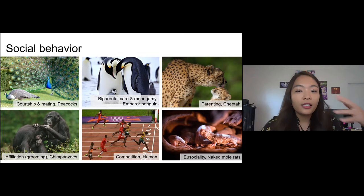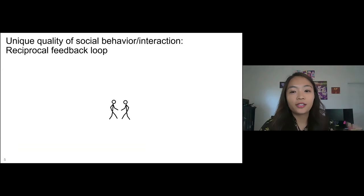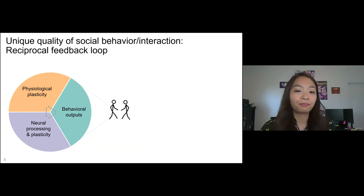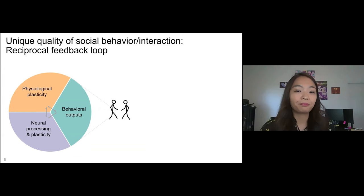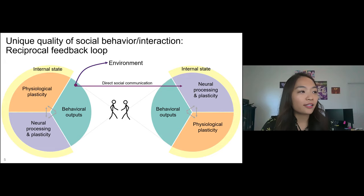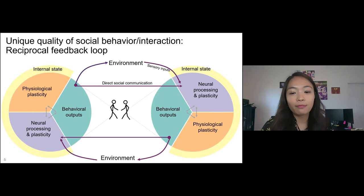Regardless of the types, these social behaviors share unique qualities. Individuals make a decision to output certain social behavior based on information processed in the brain and its current physiological state. These internal states include memory, hunger, satiety, motivation, emotion, and of course social status. Social interaction involves two decision-making individuals with their own internal states, who actively detect their social partner's behavior either directly or indirectly. This forms a dynamic and mutual feedback that happens at the fastest temporal scales, as short as milliseconds.